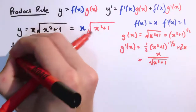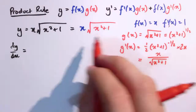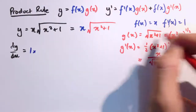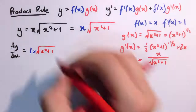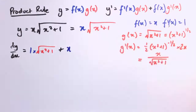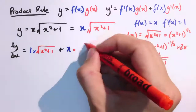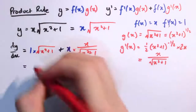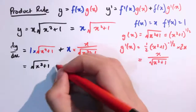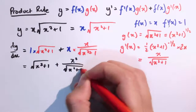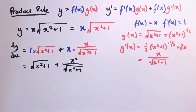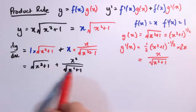Applying the product rule, dy/dx equals f dashed times g of x: that's 1 times the square root of (x squared plus 1), plus x times x over the square root of (x squared plus 1). Simplifying, that's the square root of (x squared plus 1) plus x squared over the square root of (x squared plus 1). A nice way to tidy this up is to put the first term over the same denominator — root (x squared plus 1) — by multiplying top and bottom by root (x squared plus 1), giving (x squared plus 1) over the square root of (x squared plus 1).